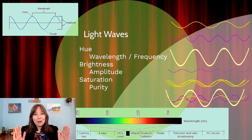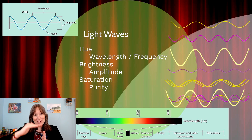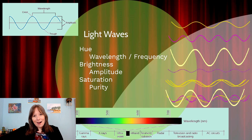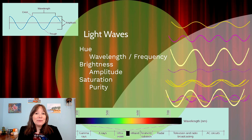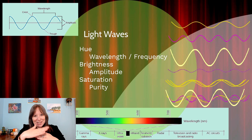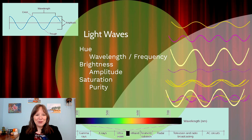Then we have brightness. Rather than being a horizontal stretch or squish, brightness is actually the vertical stretch or squish — the amplitude of the waves. Even if two waves have the same wavelength, if the crests go up higher and the troughs go down lower, we perceive this as brighter. If there's very little vertical movement, we see it as darker. I've squished the purple wave down to make it a darker purple, and stretched the yellow wave up to make it a brighter, lighter yellow.